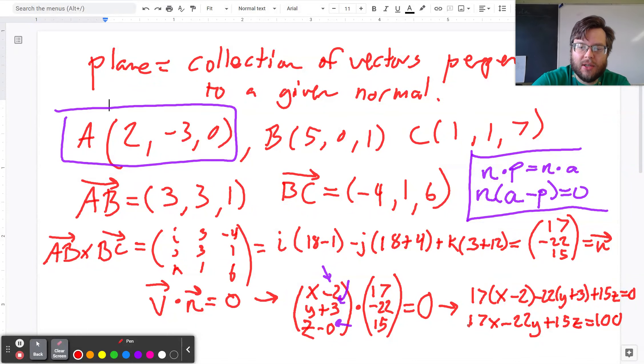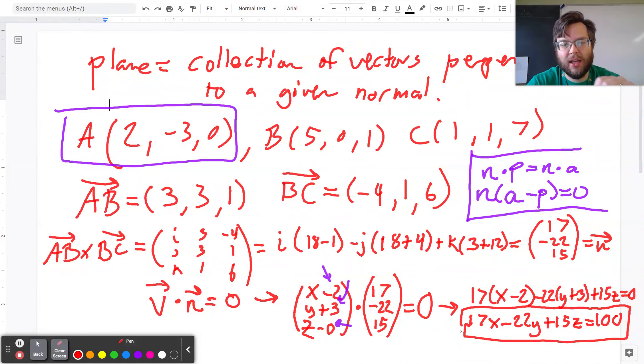So it equals 100, and you can double check that this actually contains all the points. If you take point A, you should see that 2 times 17 minus 22 times -3 plus 15 times 0 equals 100. And if I did it right, the other ones work as well. So if I take point B, 17 times 5 is 85, 0, and then 15 times 1 is 15, that adds up to 100.